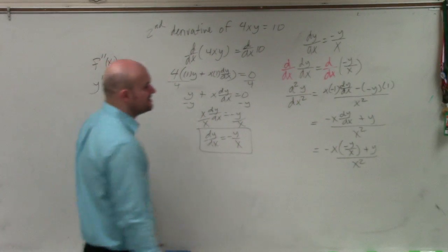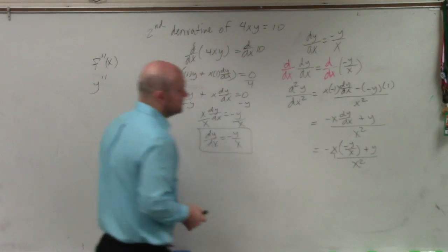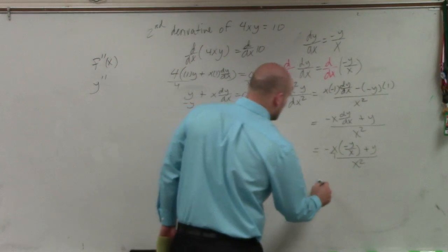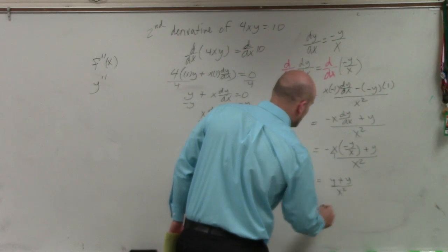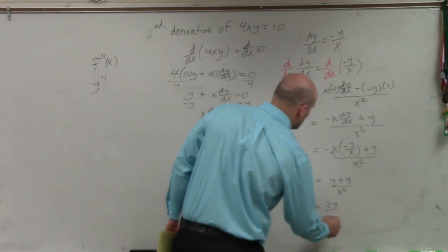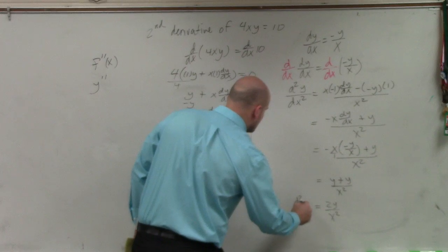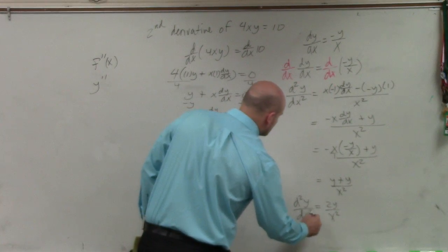Now, notice that that is in 1. So therefore, those x's divide out. And you're left with y plus y over x squared. 2y over x squared is dy over dx squared.